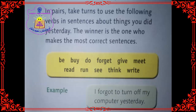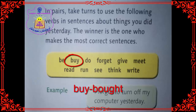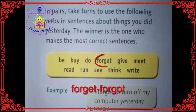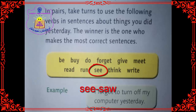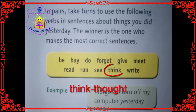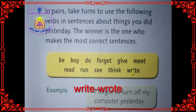Now: 'be' — what will be the past simple form of 'be'? Was or were. 'Buy' — what is the past simple form of 'buy'? Bought. 'Do' — did. 'Forget' — forgot. 'Give' — gave. 'Meet' — met. 'Read' — read. 'Run' — run. 'See' — saw. 'Think' — thought. 'Write' — wrote.